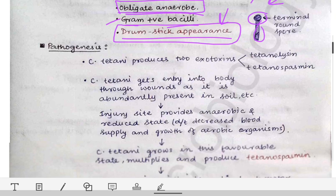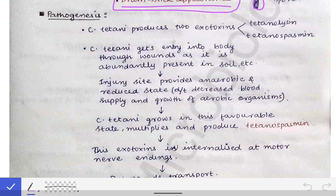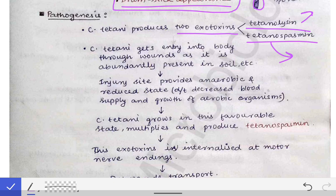Before starting pathogenesis, one must remember there are two virulence factors of Clostridium tetani — two exotoxins: tetanolysin and tetanospasmin. Tetanolysin causes hemolysis of RBCs, while tetanospasmin is the main culprit — it causes the spastic condition and contraction of muscles. From now on, our focus will be on tetanospasmin.